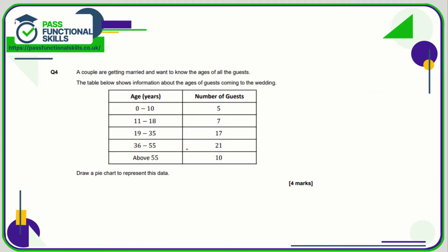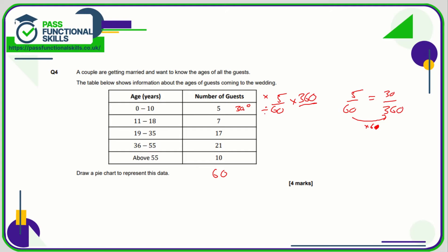Question number four is quite similar to question two. First, work out the total number of guests, which adds up to 60. For the 0 to 10 age group, that's 5 out of 60. To find the degrees, either work out 5/60 of 360, or turn it into an equivalent fraction out of 360 by multiplying by 6: 5 times 6 is 30 degrees.